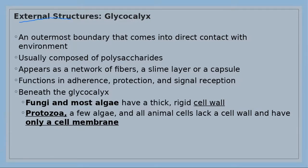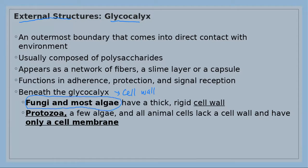The next external structure is the glycocalyx, which is only present in some eukaryotic cells — for example, some fungi have a glycocalyx, either a capsule or slime layer. Under the glycocalyx there is the cell wall. Fungi and algae have a cell wall, while protozoa and animals like helminths lack a cell wall.